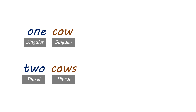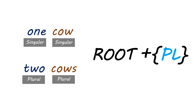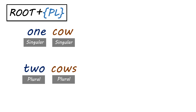The first morphological rule we have to know is that you take the root of a word — 'cow' — and you add a plural suffix to it, and that gets you a plural word. So that in and of itself is a morphological rule: that you make a plural form by adding a suffix. That's the first rule we have to know — we'll put that in our morphological rule bank for how we make plurals.